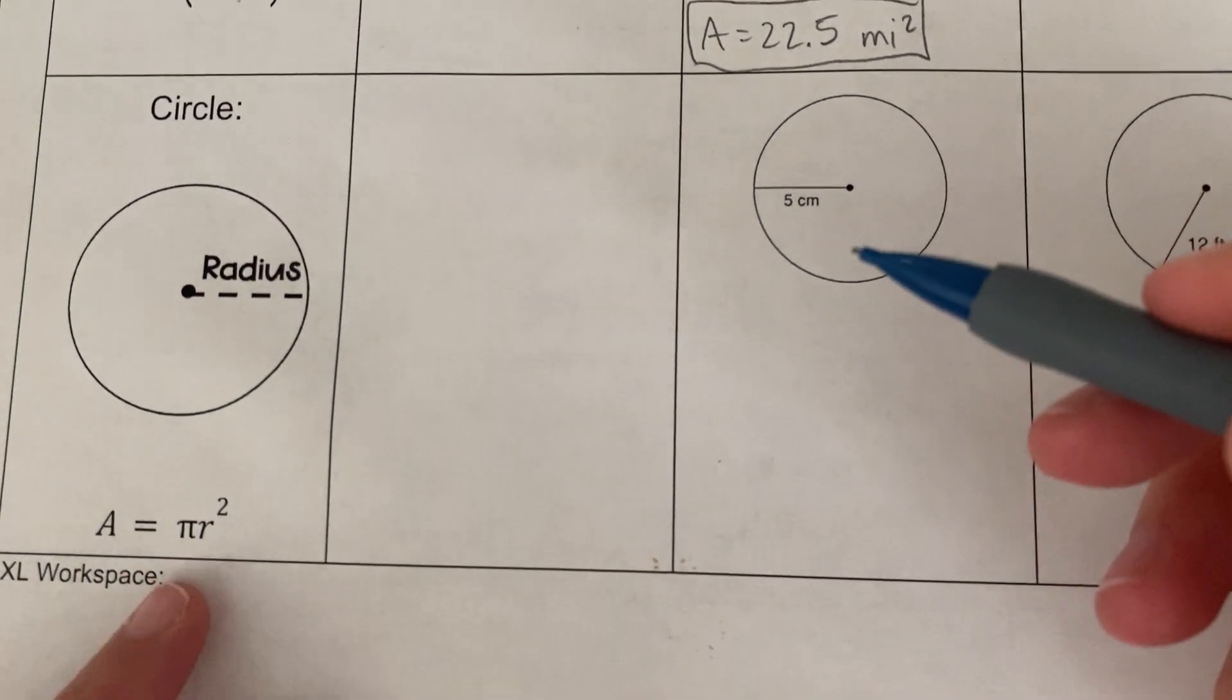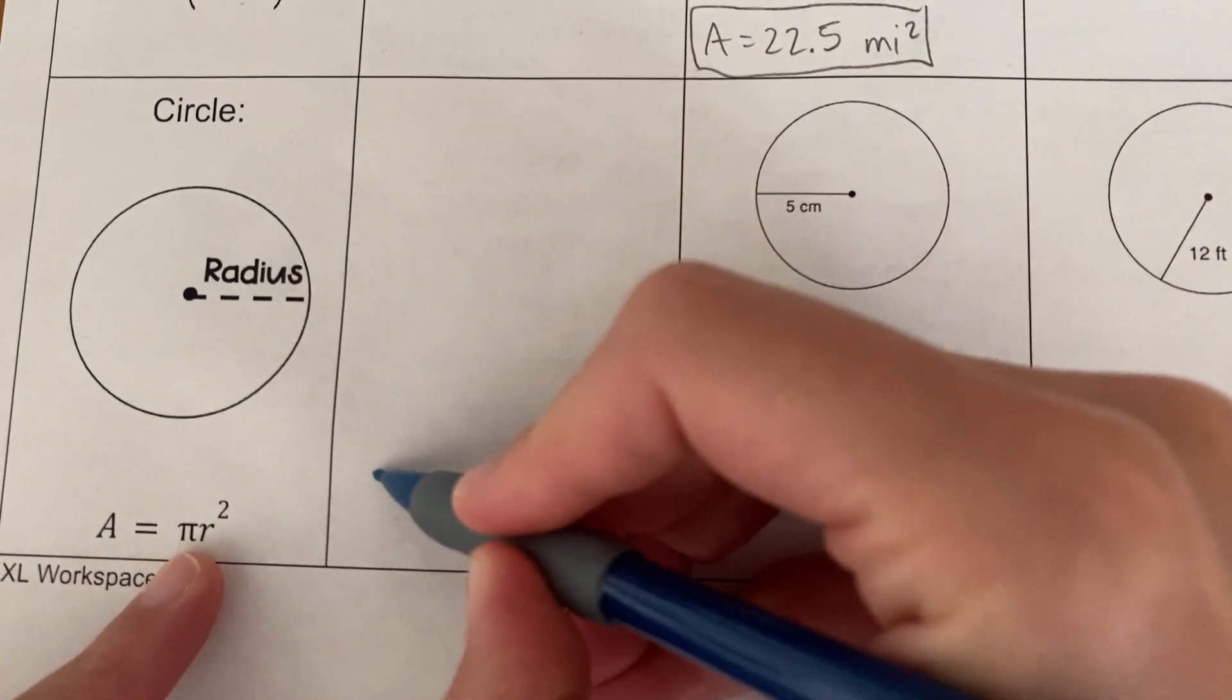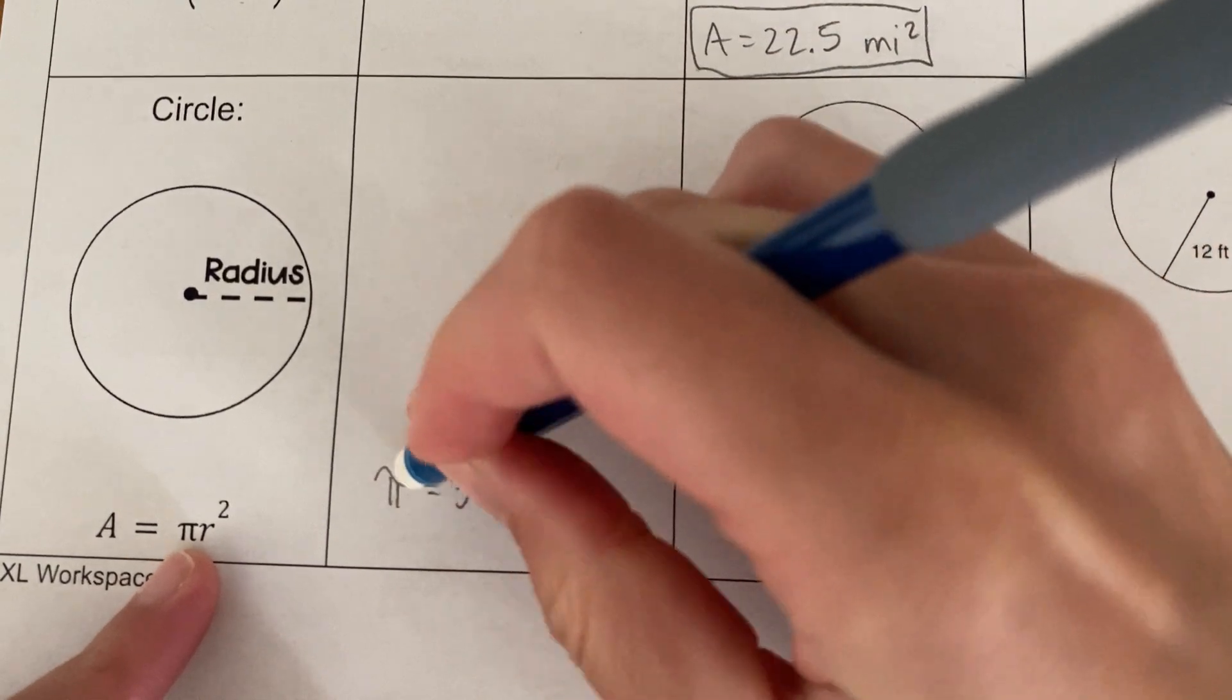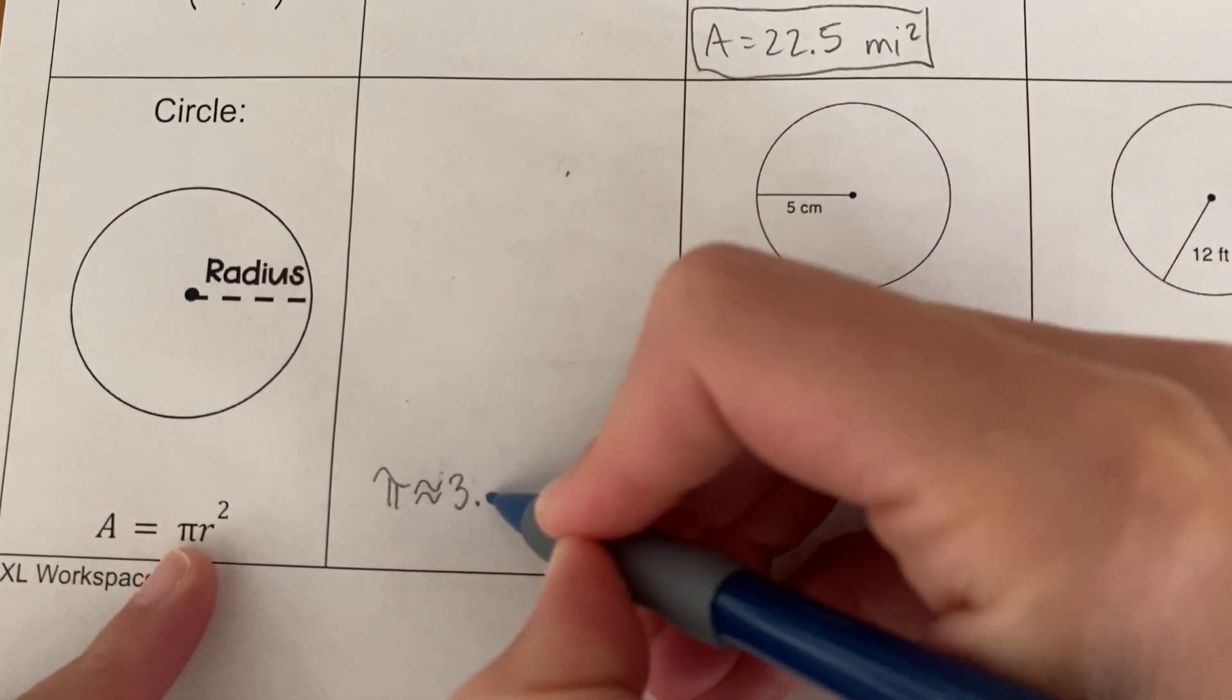Okay, a circle. The area of the circle is pi r squared. Now remember pi equals approximately, this is what we do, equals approximately 3.14.